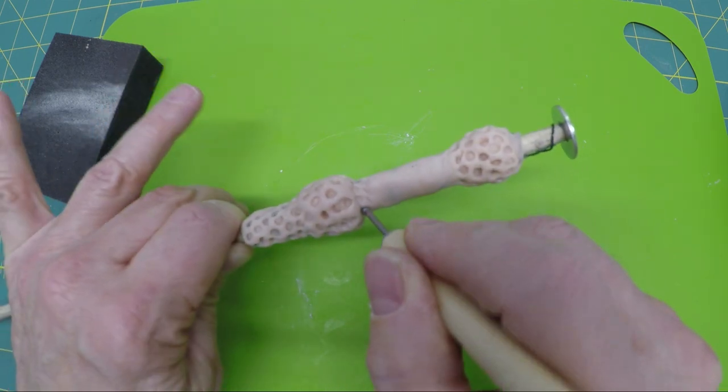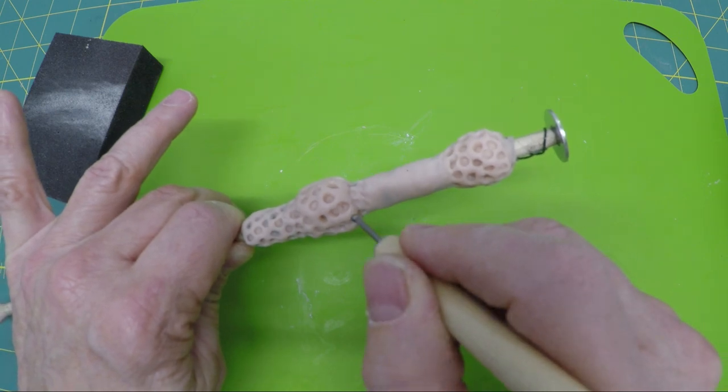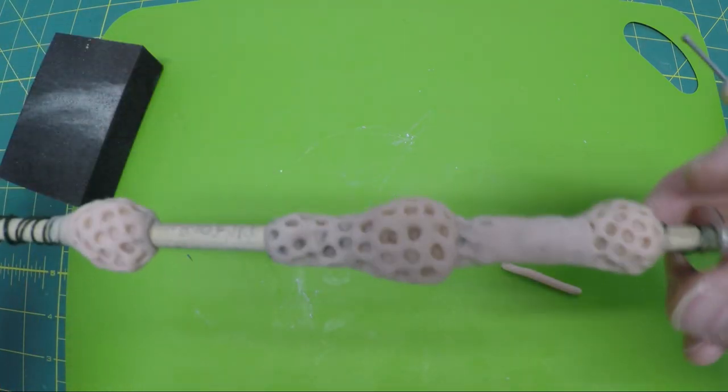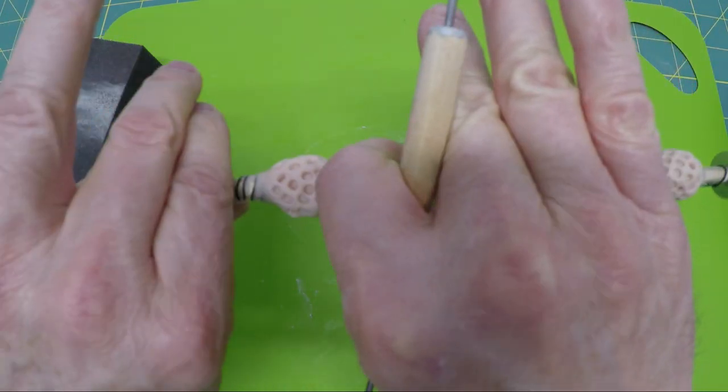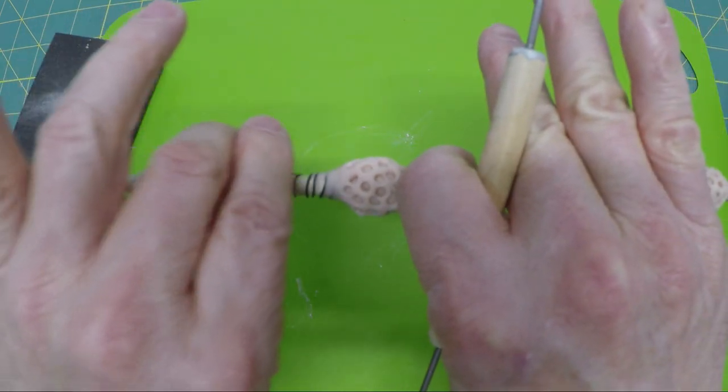Sometimes the wire seems to peek out, but that's not going to be a problem because we're going to paint. Trying to work up and down the wand and have places to hold on to. This will be probably the last piece that I do.